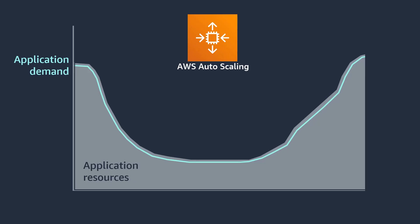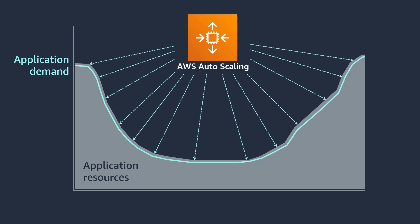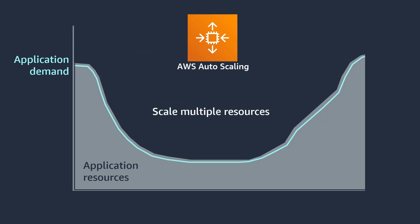This scaling can be done automatically. AWS Auto Scaling monitors the demand on your application and automatically adjusts capacity to maintain steady, predictable performance at the lowest possible cost. You can set up Auto Scaling to scale multiple resources across multiple services in minutes, and it provides recommendations to optimize performance and costs, or balance between the two.